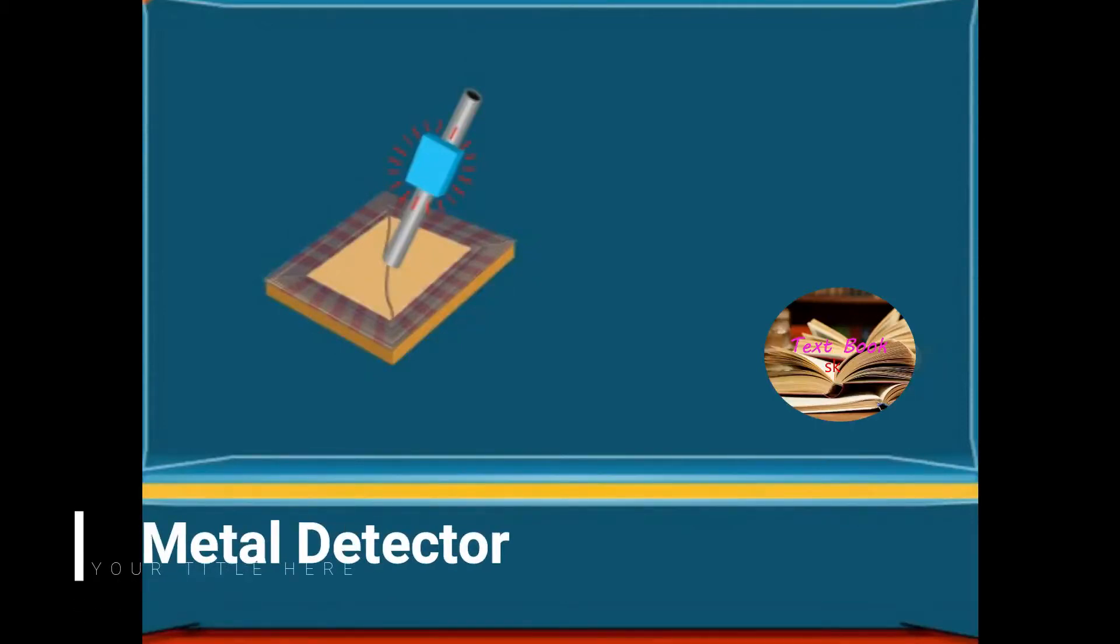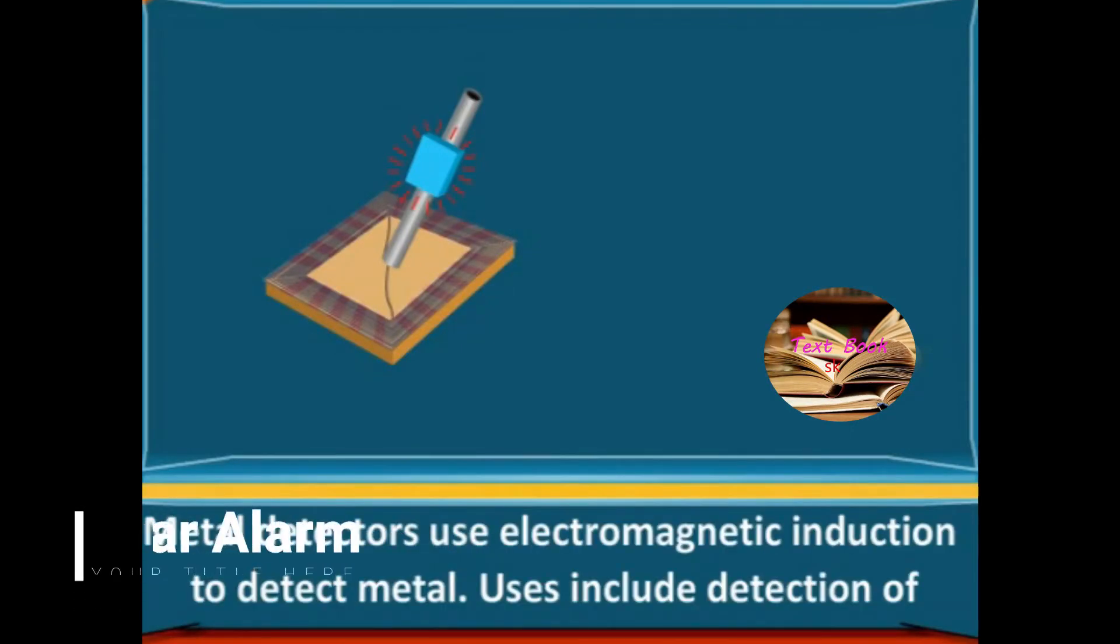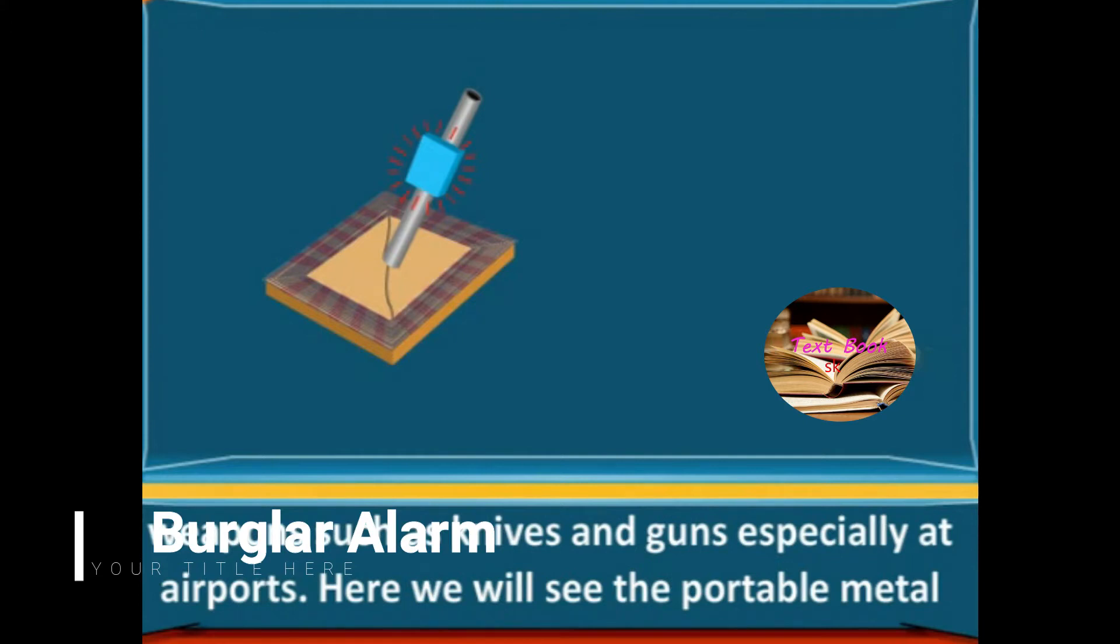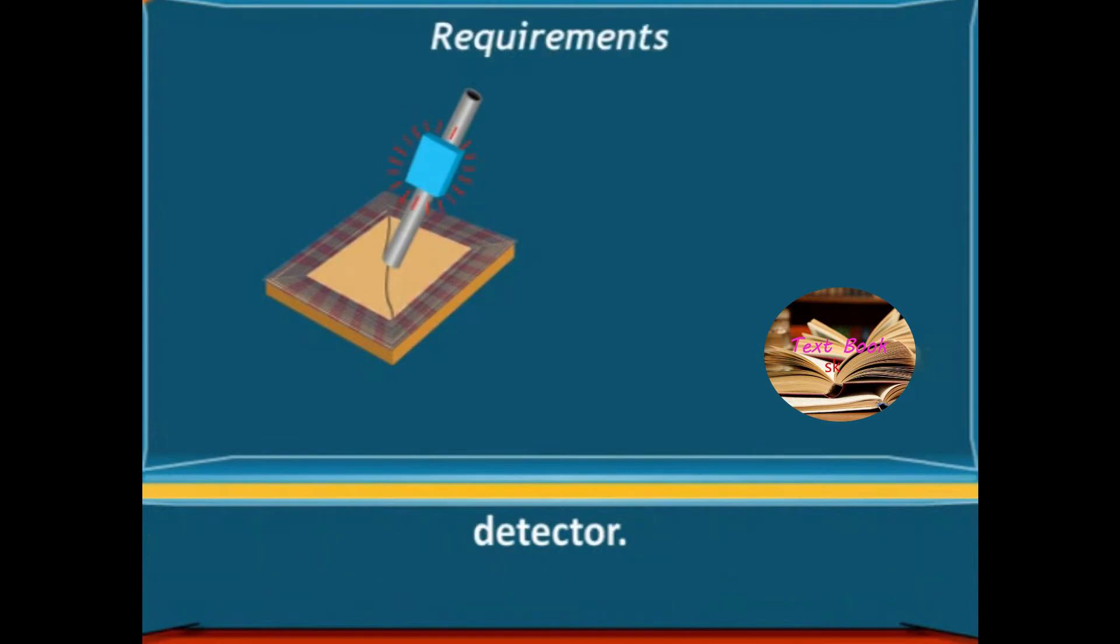Making a Portable Metal Detector. Metal detectors use electromagnetic induction to detect metal. Uses include detection of weapons such as knives and guns, especially at airports. Here we will see the portable metal detector.